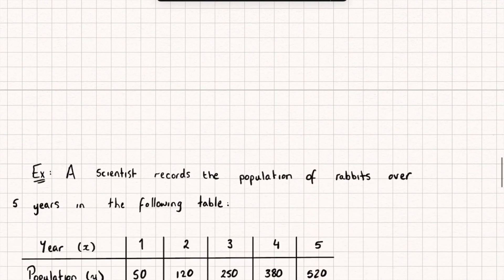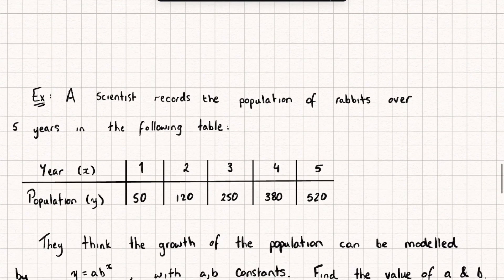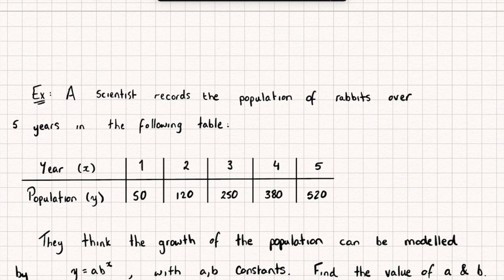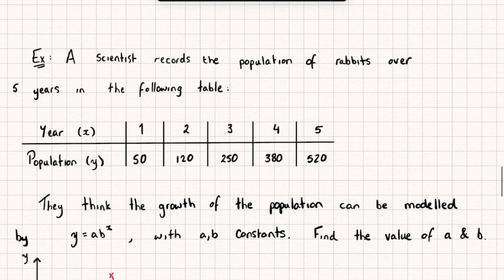Okay, let's look at the first question. We have a scientist recording the population of rabbits over five years, and they record the data in a table. They think the growth of the population can be modelled by the exponential equation y = a × b^x, where a and b are constants, and we're asked to find the values of both a and b.